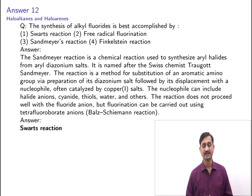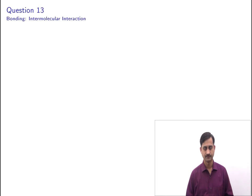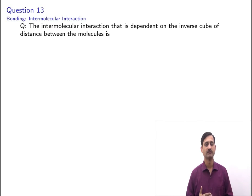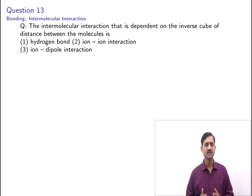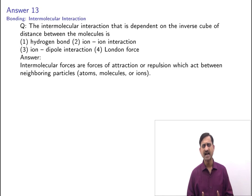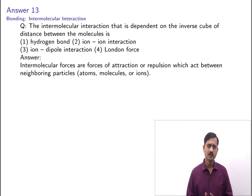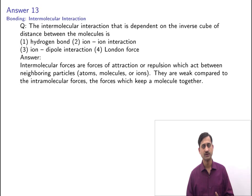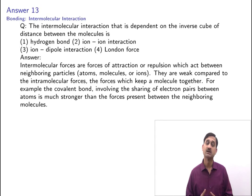The next question is from bonding and intermolecular interactions. The question asks: the intermolecular interaction that is dependent on the inverse cube of distance between the molecules is — hydrogen bond, ion-ion interaction, ion-dipole interaction, or London force? Intermolecular forces are weaker than intramolecular forces such as covalent bonds. A hydrogen bond is the attraction between the lone pair of an electronegative atom and a hydrogen bonded to N, O, or F — often described as a strong electrostatic dipole-dipole interaction.